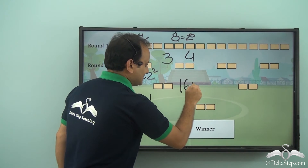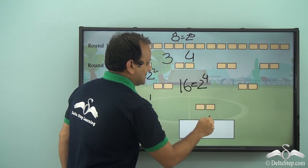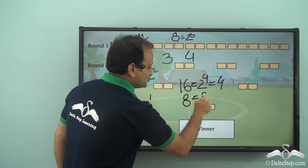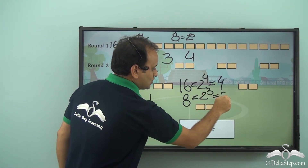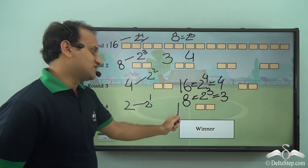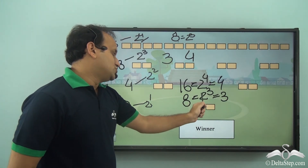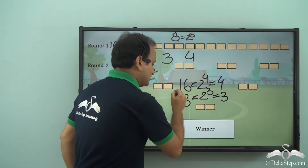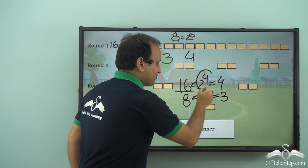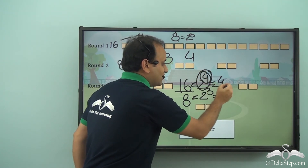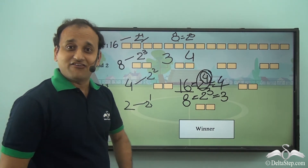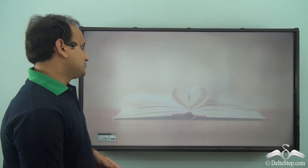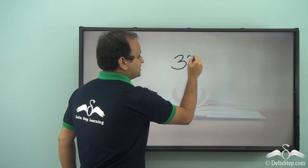For 16 teams — that is, 2⁴ teams — the number of rounds was 4. For 8 teams — that is, 2³ teams — the number of rounds was 3. So if the total number of teams is expressed as a power of 2, that power gives the number of rounds in the tournament.